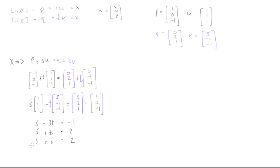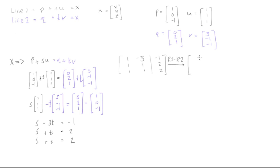We now have a system of linear equations, so let's write the augmented matrix. The rows are: [1, -3 | -1], [1, 1 | 2], [1, 1 | 2]. Right away we can eliminate the bottom row by subtracting row two from row three, giving us a row of zeros.